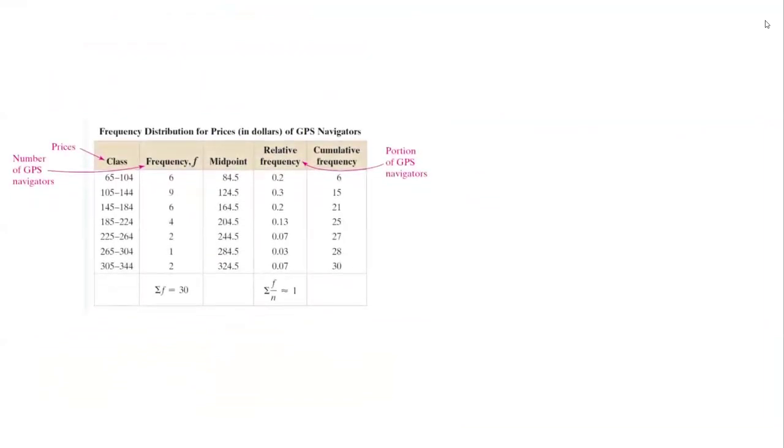And here is the table that shows everything nicely. So this is the frequency distribution table. As you can see on the very first column, you have all the classes or bins. On the second one, you have the frequency for each class. On the third column, you have the midpoint, which are representatives for the data set.